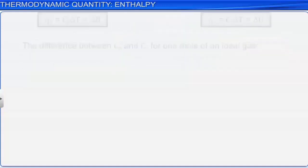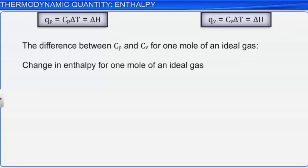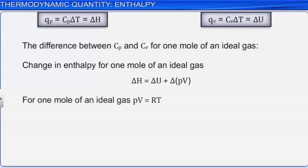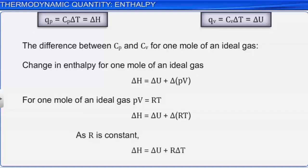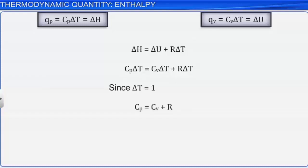The difference between Cp and Cv for one mole of an ideal gas can be derived as follows. Delta H = delta U + delta(PV). For one mole of an ideal gas, PV = RT. Hence, delta H = delta U + R × delta T. On substituting delta H = Cp × delta T and delta U = Cv × delta T, we get: Cp × delta T = Cv × delta T + R × delta T. Since delta T = 1, the equation simplifies to: Cp = Cv + R, or Cp − Cv = R.